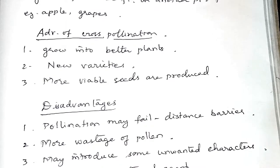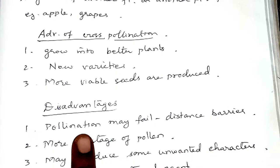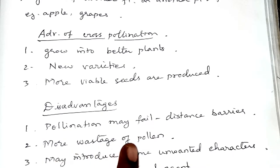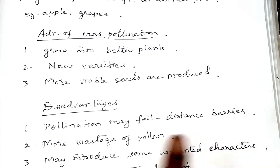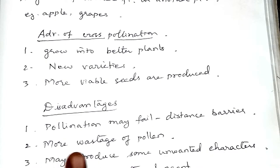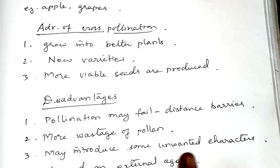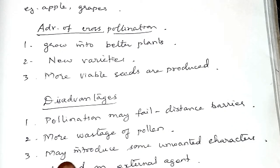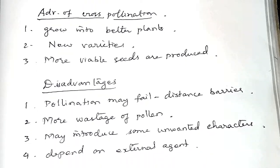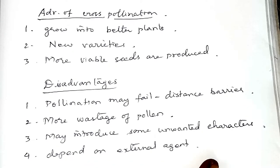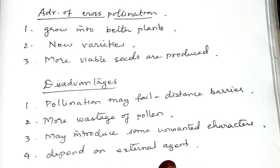The disadvantages of cross-pollination: pollination may fail sometimes because of distance barriers. If plants are separated from each other over a long distance, agents may not be efficient enough to carry pollen from one plant to another. Distance becomes a barrier and pollination may fail. There is also more wastage of pollen grains in cross-pollination. It may sometimes introduce unwanted characters in the plant, since it is unknown which pollen grain is pollinating a particular flower. Flowers also depend on external agents for pollination — if agents are not available, pollination does not take place, which is a drawback.